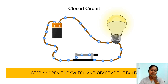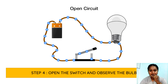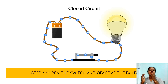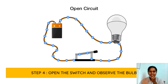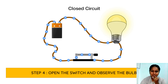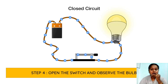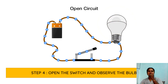Step five: open the switch and observe the bulb. When you open the switch, the current will be stuck — it cannot flow through the connecting wire because the switch is open. So the bulb doesn't light up. When you close the switch the current can flow and the bulb lights up. When you open the switch the current will not flow and the bulb doesn't light up. This is the difference between the open circuit and the closed circuit.